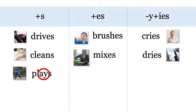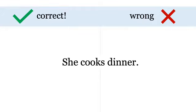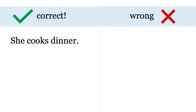So let's practice. Look at the sentence: she cooks dinner. Think, is the verb form correct? Correct. She cooks dinner. Yes, correct.